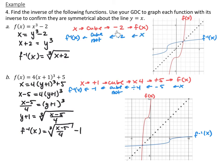The graph shows f(x) in red and f⁻¹(x) in blue, with the dotted line y = x. They are symmetric — reflected — across the line y = x. For the second function f(x) = (4x + 1)³ + 5: switch x and y to get x = (4y + 1)³ + 5, subtract 5, divide by 4, take the cube root, subtract 1. So f⁻¹(x) = ∛((x - 5)/4) - 1. Again, the graph confirms the two functions are symmetric across y = x.